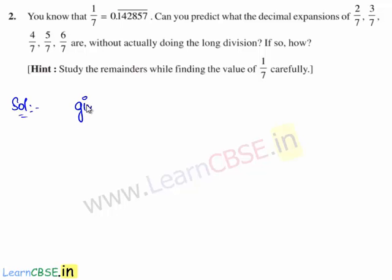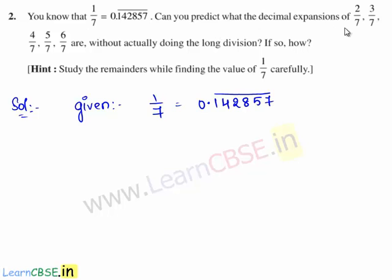Given is 1 by 7 is equal to 0.142857 bar. Here we can predict the decimal expansions of 2 by 7, 3 by 7, 4 by 7, 5 by 7, and 6 by 7 without actually doing the long division. The decimal expansion of 2 by 7 can be obtained by multiplying 2 with 1 by 7.